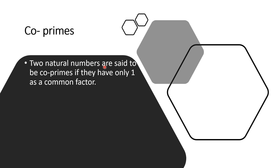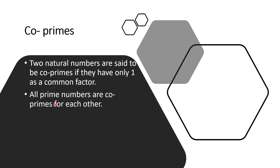Two natural numbers are said to be co-primes if they have only 1 as a common factor. All prime numbers are co-primes for each other. For example, 2 and 3 are both prime numbers. The factors of 2 are 1 and 2 only, and the factors of 3 are 1 and 3 only, so the common factor between 2 and 3 is only 1. Similarly, the common factor of 3 and 5 is only 1, and of 5 and 7 is only 1. So all prime numbers are co-primes for each other.